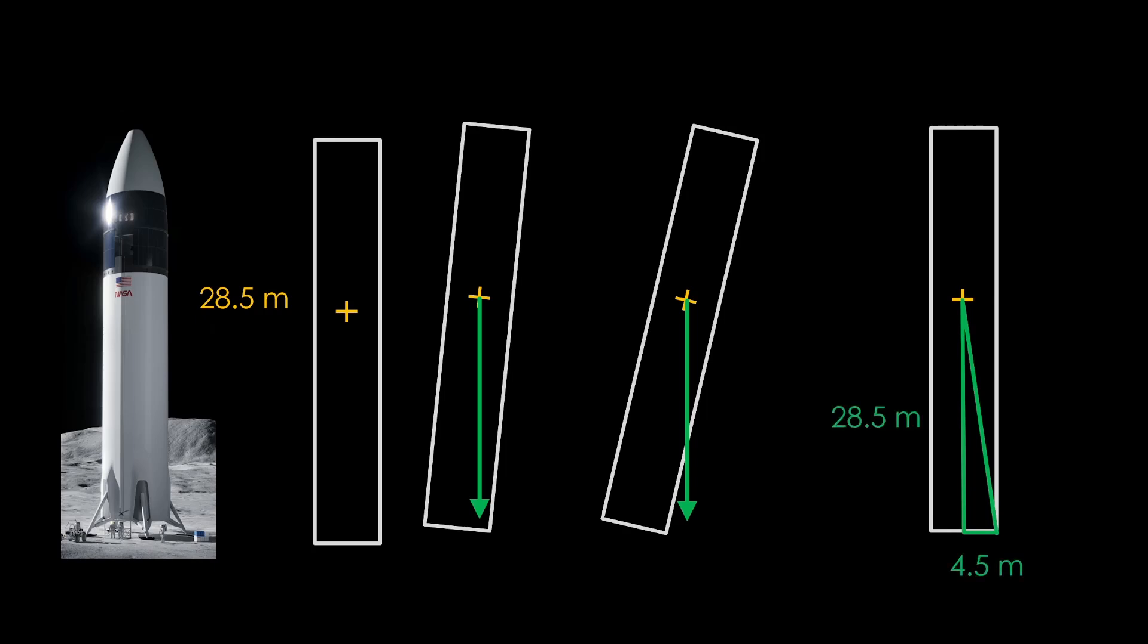The vertical distance is 28.5 meters. The horizontal distance is half the diameter, or 4.5 meters. I'm sure everybody remembers from their high school trigonometry that the tangent of the angle is equal to the length of the opposite side divided by the length of the adjacent side, and from that we can calculate that the angle is 9 degrees, which would seem to validate the belief that Starship makes a tippy lander.